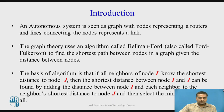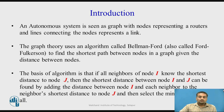An autonomous system is seen as a graph with nodes representing the routers, and the arcs or lines connecting the nodes represent the links. Distance vector routing is based on graph theory.